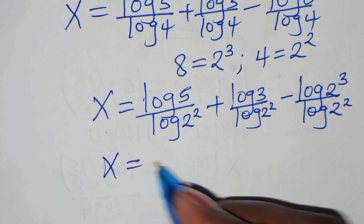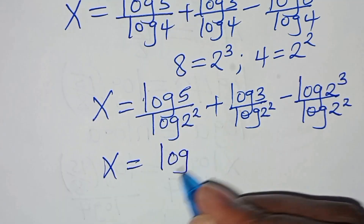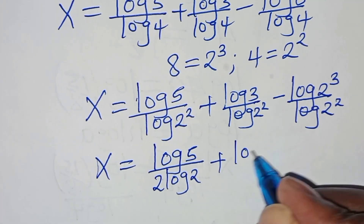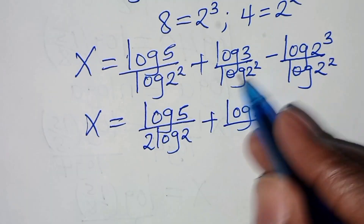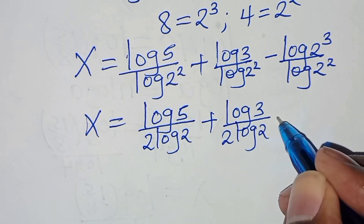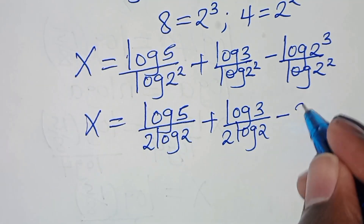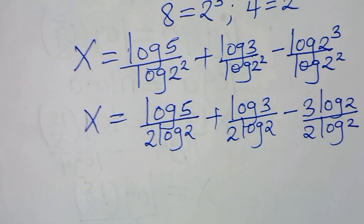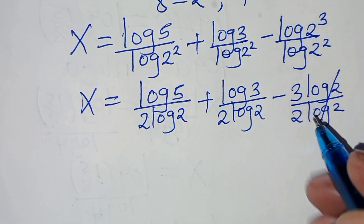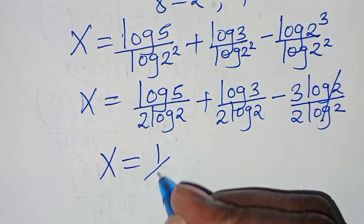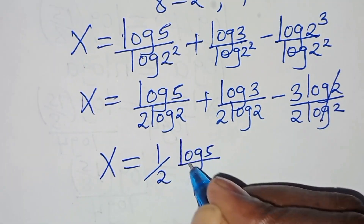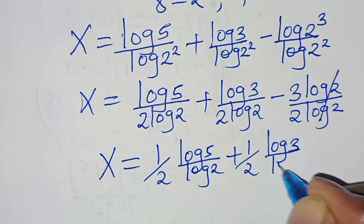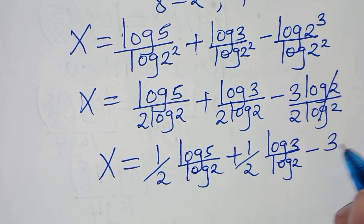Applying the power rule property, log(2²) becomes 2 log 2 and log(2³) becomes 3 log 2 in the denominators. So x equals log 5 divided by 2 log 2, plus log 3 divided by 2 log 2, subtract 3 log 2 divided by 2 log 2. The log 2 terms simplify, giving x equals one-half times log 5 over log 2, plus one-half times log 3 over log 2, subtract 3 over 2.